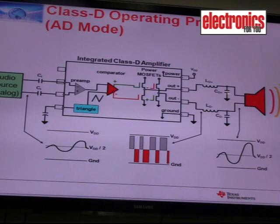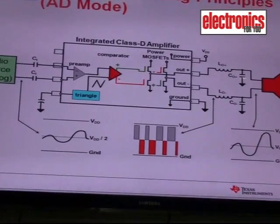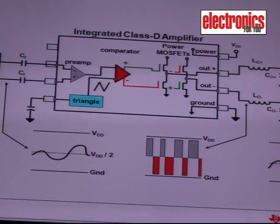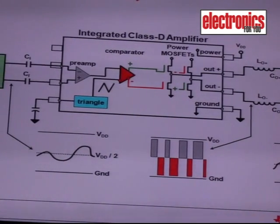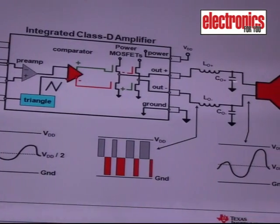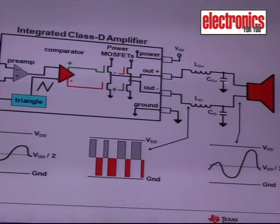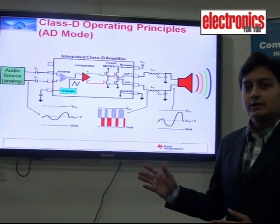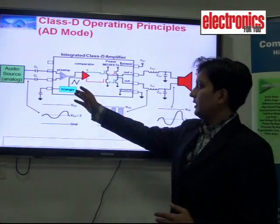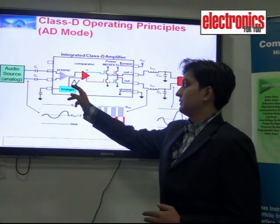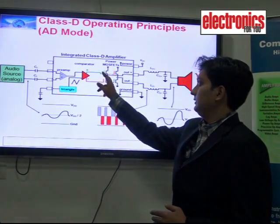To reconstruct the signal, you use an LC filter — a lossless filter — and that is why you use an LC filter rather than an RC filter. At the output you get a very clean, distortion-free audio signal. In the block diagram, you can see the comparator where the audio signal is compared with the high-frequency triangular wave.